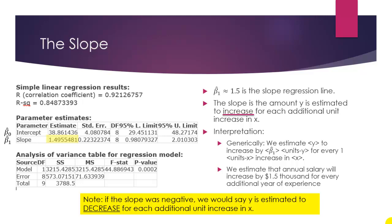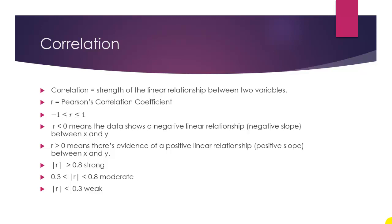Next, we'll explore a similar concept to slope called correlation. Correlation is the linear relationship between two variables. A common measure of correlation is called the Pearson correlation coefficient. This number is always between negative 1 and 1 inclusive. It could be negative 1 or it could be 1 if the relationship is perfectly linear.